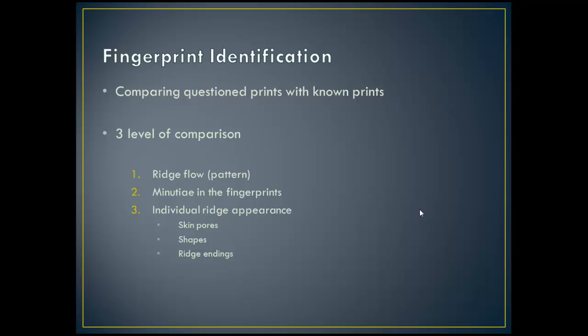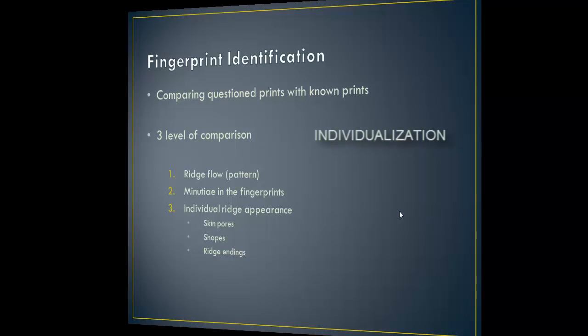When analyzing question prints, comparisons are made according to the presence of ridge flow patterns, minutiae, and unique ridge appearances such as skin pores, shapes, and ridge endings. The conclusions of such analysis will fall into one of three outcomes: individualization, which means the question prints are derived from the same source as the suspect — you are able to identify the print; elimination, where the print is identified but is not derived from the same source as the suspect or person in question; or inconclusive, where there is not enough detail present to either identify or eliminate the print.